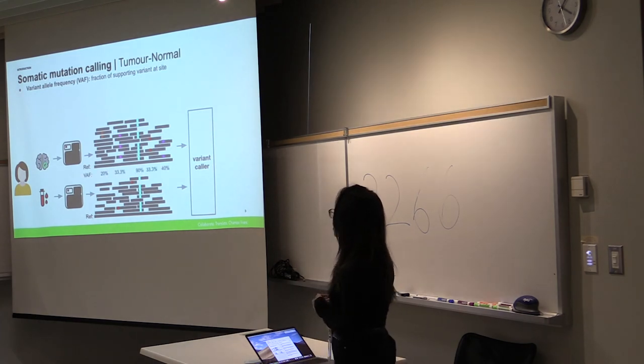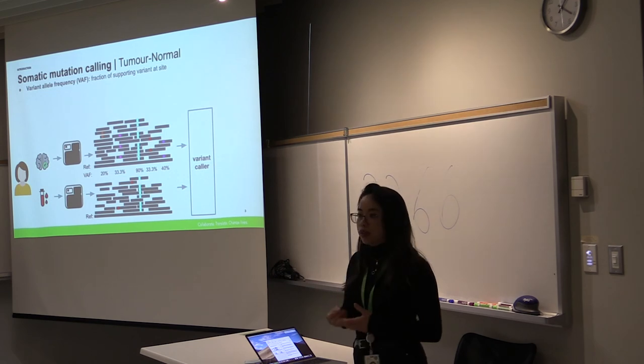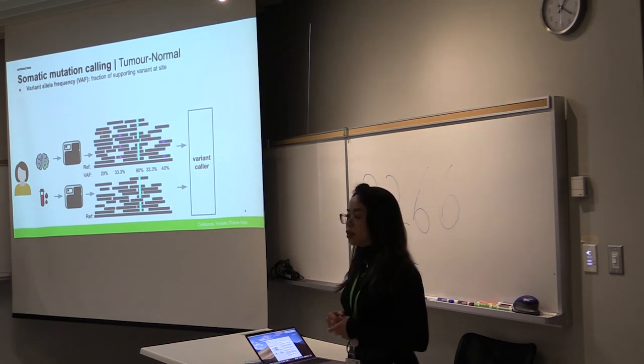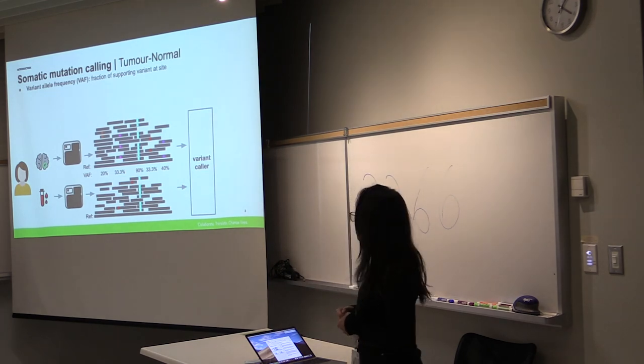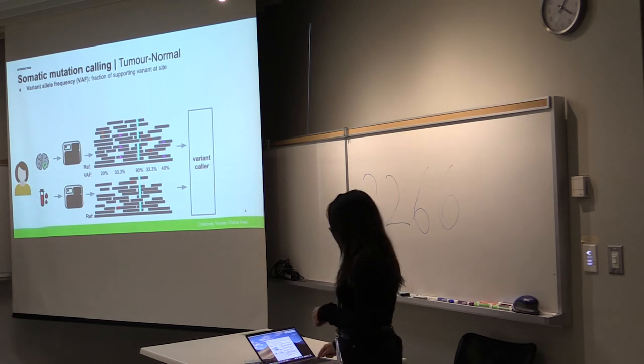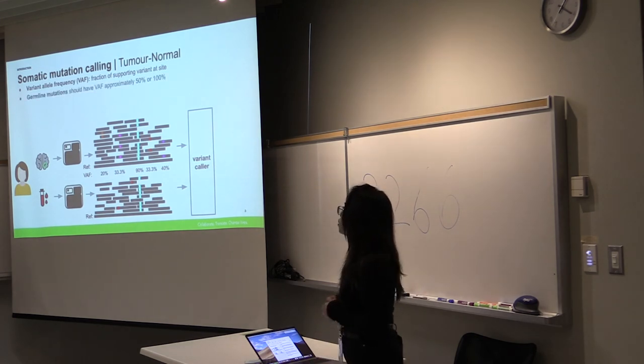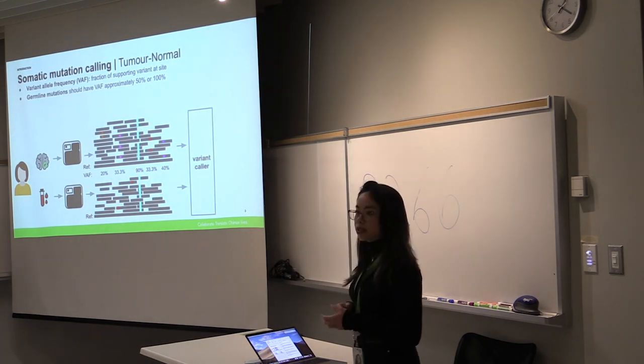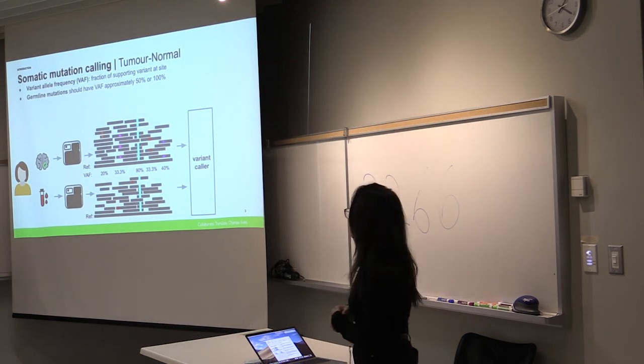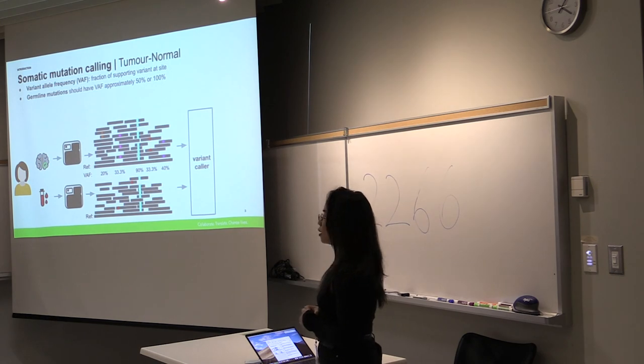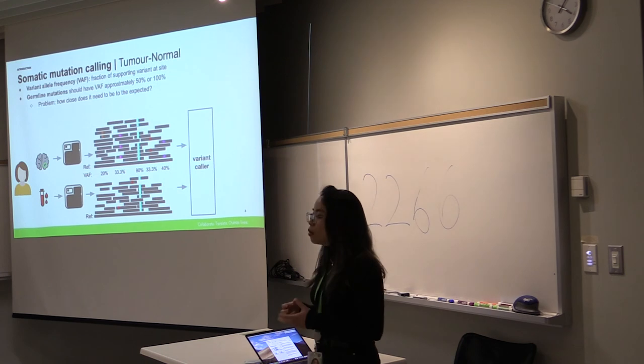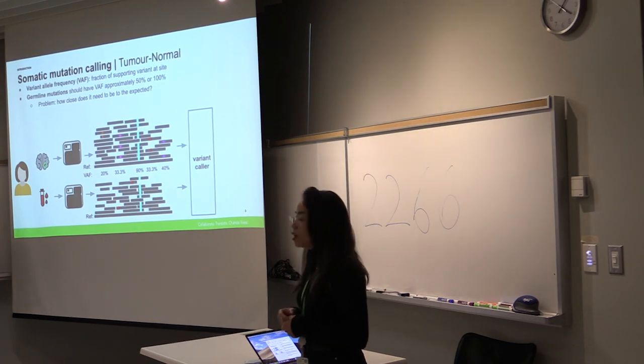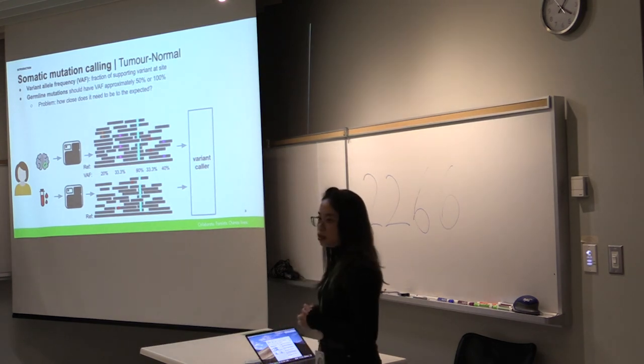So how that is done is they normally assess the variant allele frequency, so that's the fraction of reads that are supporting that variant at that site. Using the VAF and the knowledge that the germline mutations are supposed to follow this VAF 50% for heterozygous mutations and 100% for homozygous mutations they can categorize germline mutations but the problem with that is trying to understand how close it's supposed to be to be expected to call it a germline mutation.